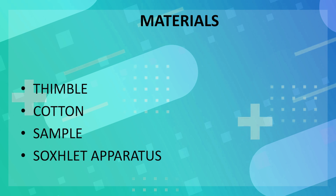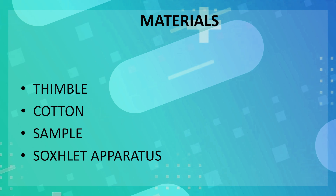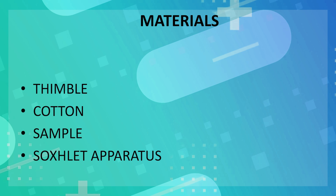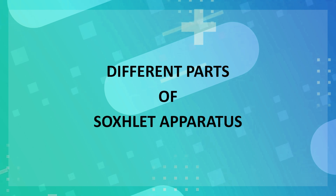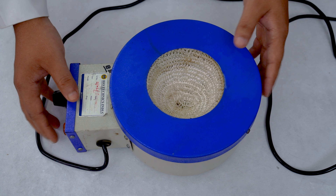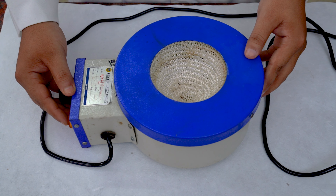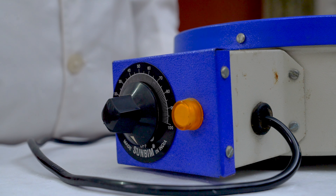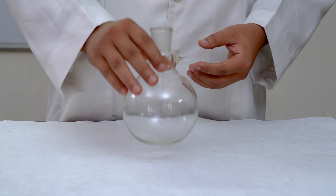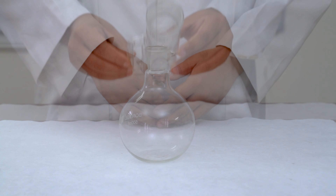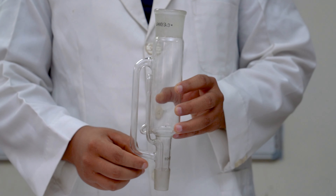The following materials are required for the extraction and estimation of oil. We are now going to explain different parts of the Soxhlet apparatus. This is the heating device, used to heat the solvent during the extraction process. It has a regulator by which we can adjust the temperature. This is the round-bottom flask. This is the Soxhlet chamber. It has two tubes: this is the vapor tube and this is the siphon tube.